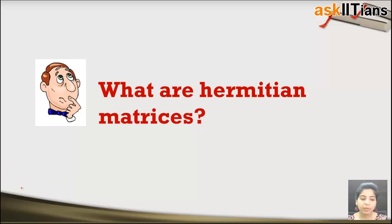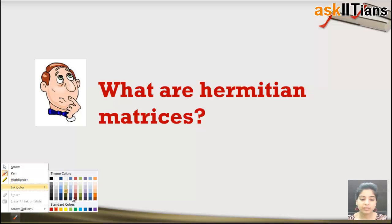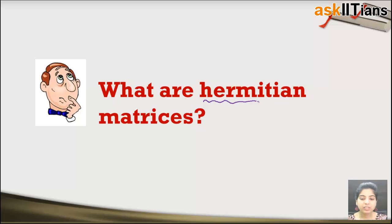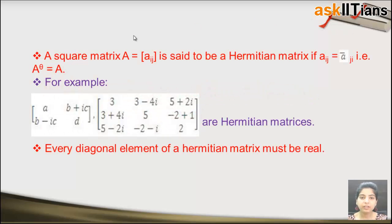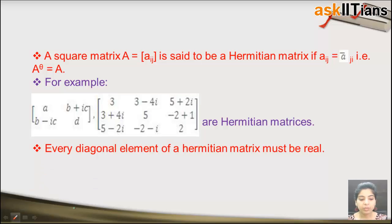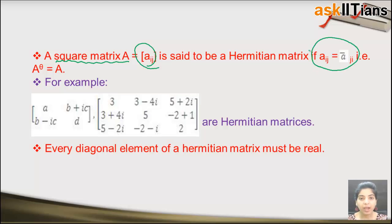Now, what do we mean by a Hermitian matrix? It's not too complicated but it's not that simple either. The definition says: a square matrix A = [a_ij] is said to be a Hermitian matrix if a_ij equals the conjugate of a_ji, that is, A^θ equals A.